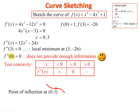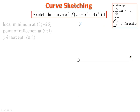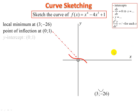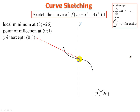The point of inflection is at x equals zero, y equals one. The y-intercept is also (0, 1). Now let's put these onto the Cartesian plane: local minimum at (3, −26), point of inflection and y-intercept both at (0, 1). Looking at the sketch, we need to estimate x-intercepts — approximately 0.7 and 4.2. Let's draw a line there to confirm.